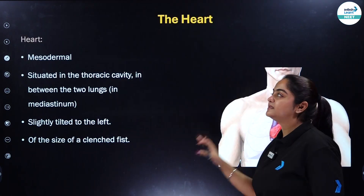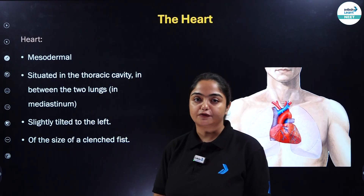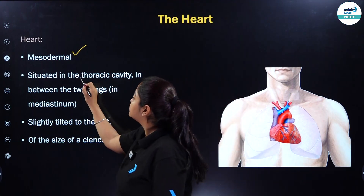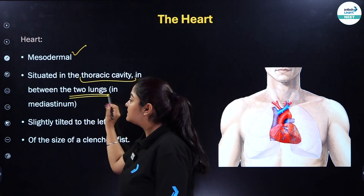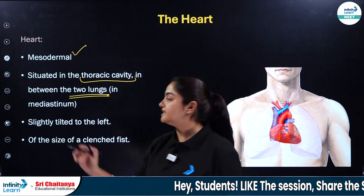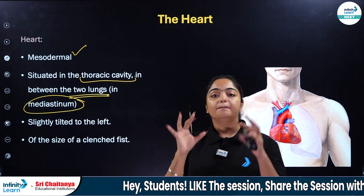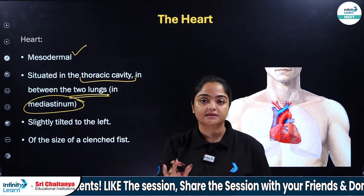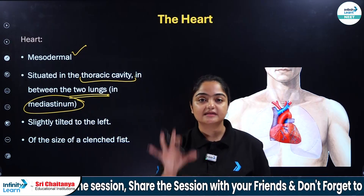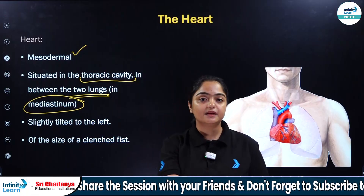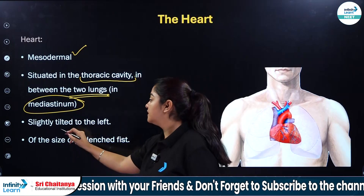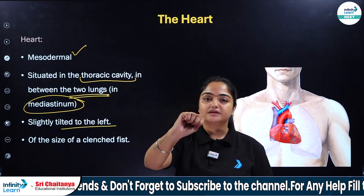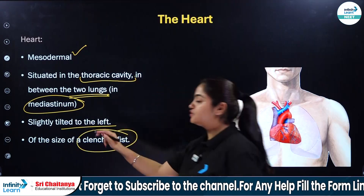To understand double circulation, it's really important to know the basic features of your heart. When I talk about the heart, you know that it's mesodermal in origin. Also, it is situated in the thoracic cavity between the two lungs, in a cavity known as the mediastinum. The heart is present in the mediastinum and it is slightly tilted towards the left — not present in the left, but in the center, slightly tilted. The size of the heart is just like a clenched fist.